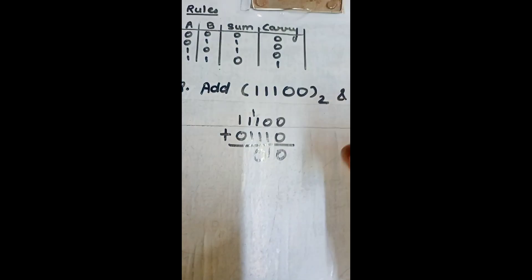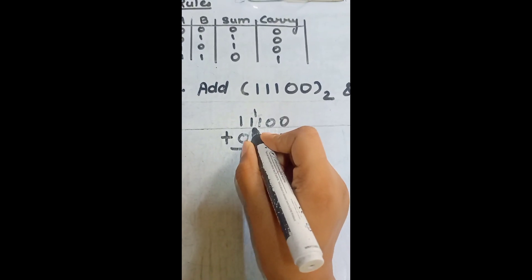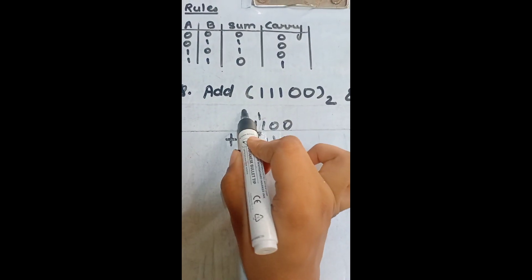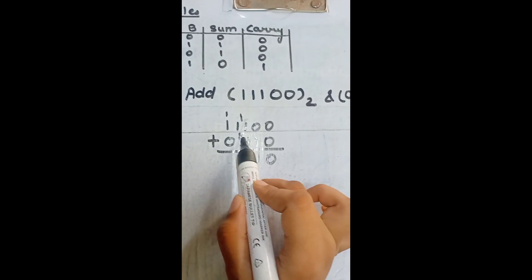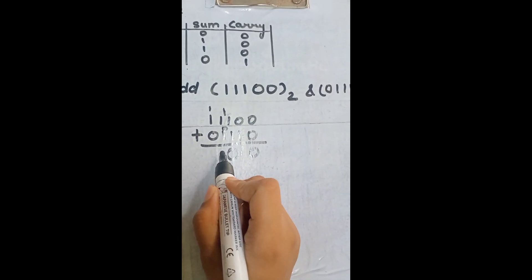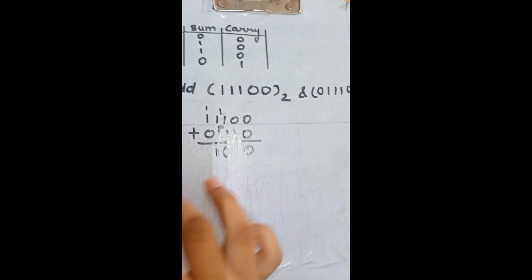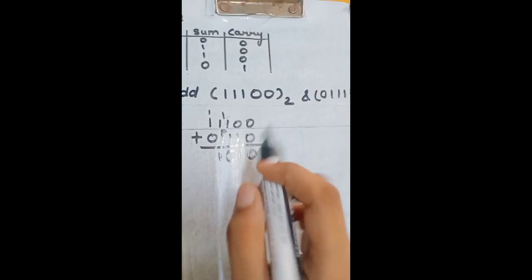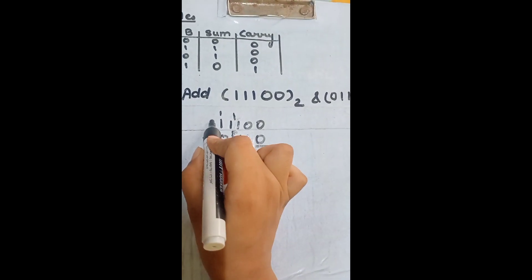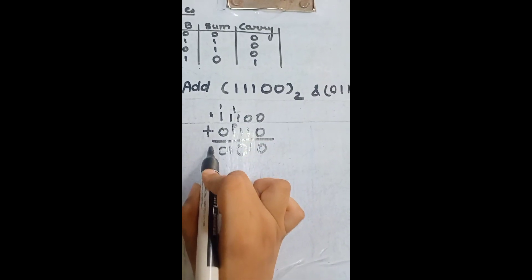So, 1 plus 1 is 0 and carry is 1. Now, add this 0 plus 1, sum is 1, carry is 0. Now, 1 plus 1, sum is 0